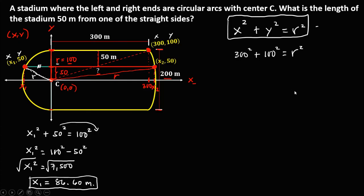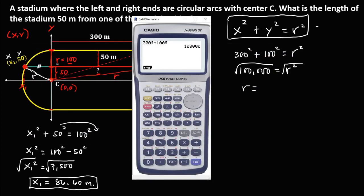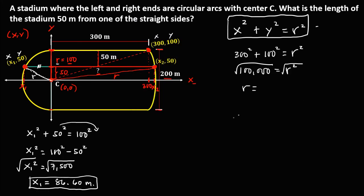To solve for the radius, take the square root. Therefore, the radius equals √100,000, which is 316.23. So the radius is 316.23.